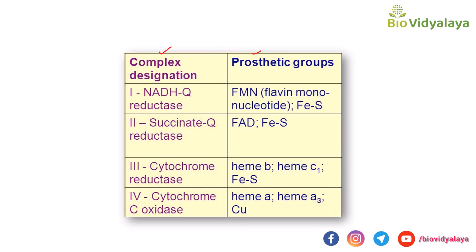The complexes and their names: Complex 1 is NADH-Q reductase, also known as NADH dehydrogenase. Complex 2 is succinate-Q reductase, also known as succinate dehydrogenase. Complex 3 is cytochrome C reductase. Complex 4 is cytochrome C oxidase. Their prosthetic groups are: Complex 1 — FMN, Fe-S; Complex 2 — FAD, Fe-S; Complex 3 — heme B, heme C1, Fe-S; Complex 4 — heme A/A3, copper. Please try to remember this.